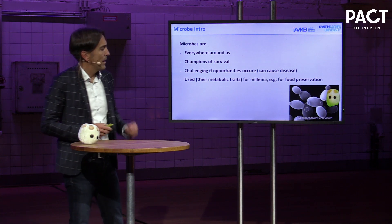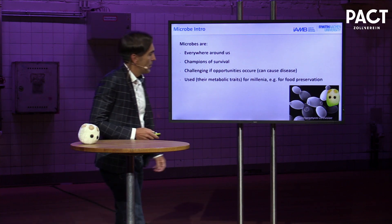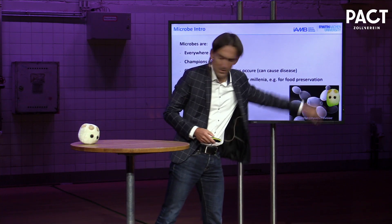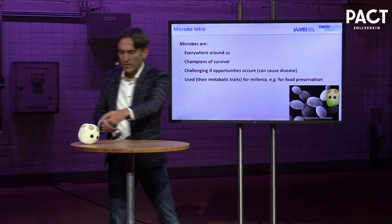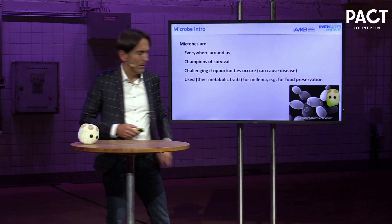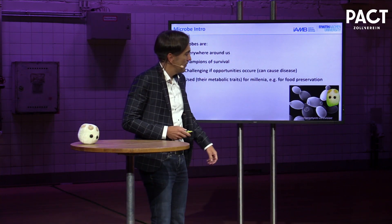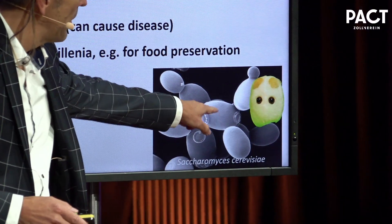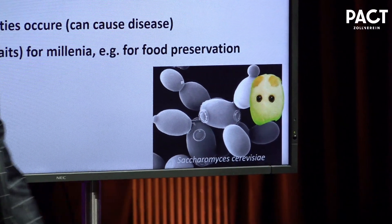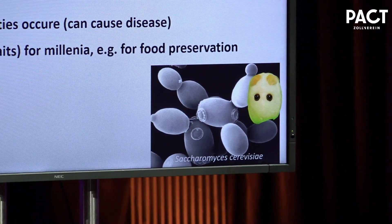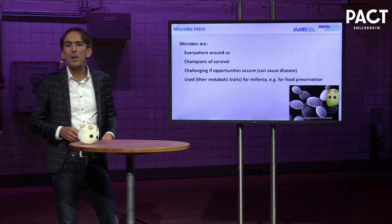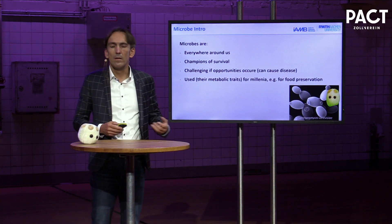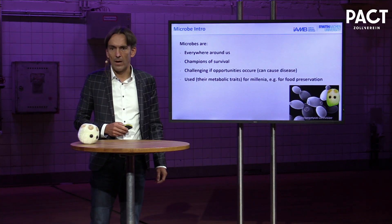Here you see again my little friend — the baker's yeast. You may see here also these scars when the daughter cells are budding off, which happens maybe up to 20 or 30 times, and then the mother cell dies.